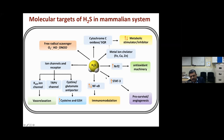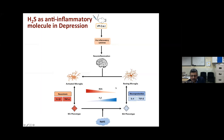H₂S also regulates STAT1, a pro-survival and angiogenesis-inducing transcription factor. An example from our lab: we created a model of depression in animals by administering lipopolysaccharide (LPS), which stimulates brain inflammation and releases inflammatory cytokines. Once the brain is inflamed, resting microglia — the brain's immune cells — become activated.